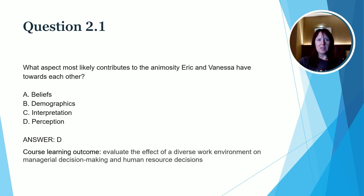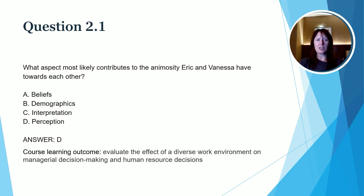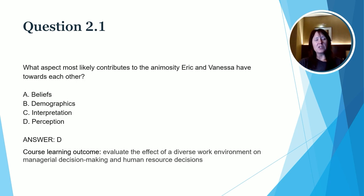The first question asks: what aspect most likely contributes to the animosity Eric and Vanessa have toward each other? The correct answer is D, perception. As you learned in this course, people perceive things in very different ways, and that is really the root cause of the issues. For example, Eric doesn't think Vanessa values his education, but that's just his perception — we don't know if that's actually true. While beliefs, demographics, and interpretation may differ, the key factor here is perception. This relates to the learning outcome: evaluate the effect of a diverse work environment on managerial decision making and human resource decisions.